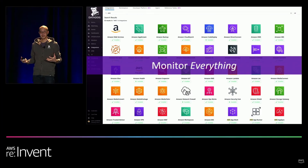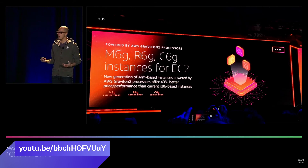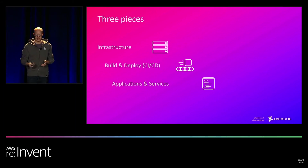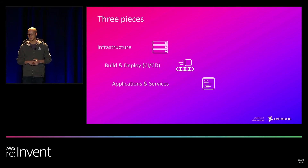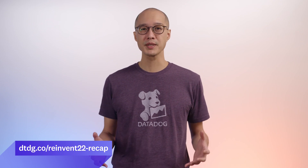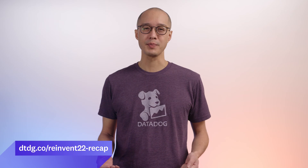In my session, I shared the lessons that we learned at Datadog as we migrated several services from x86 nodes to Graviton, AWS's ARM64 processor. There were a lot of challenges and quite a few surprises along the way, but that's what makes engineering at Datadog so fun. For more information about these presentations, highlights of other sessions we attended, and a recap of the top announcements from Datadog and AWS, check out our reInvent blog post.